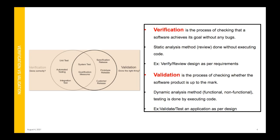Validation is the process of checking whether the software product is up to the mark. Verification is different from validation. Verification is a static analysis method — we review it without executing the code. For example, when we do the design, we verify whether it is as per the requirements or not.